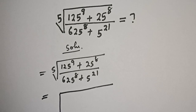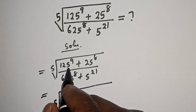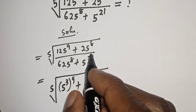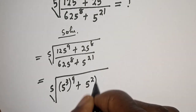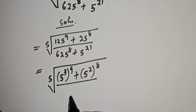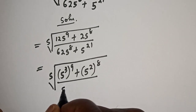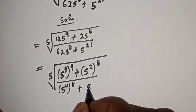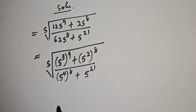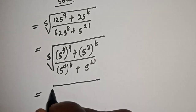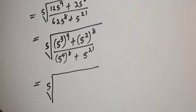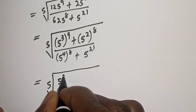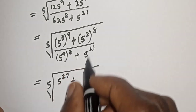5th root of: 125 raised to power 9 is 5 raised to power 3, to the power of 9; plus 25 is 5 squared, raised to power 8; over 625 is 5 raised to power 4, to the power of 8; plus 5 raised to power 4. So we get 5 raised to power 3 times 9, that is 5 raised to power 27, plus 5 raised to power 2 times 8, that is 16.